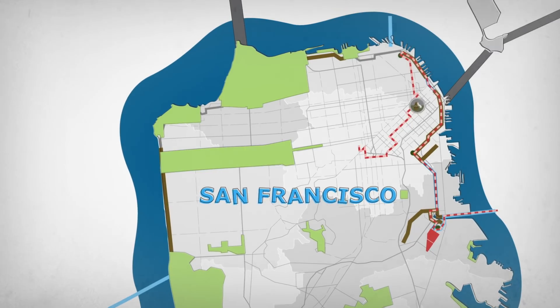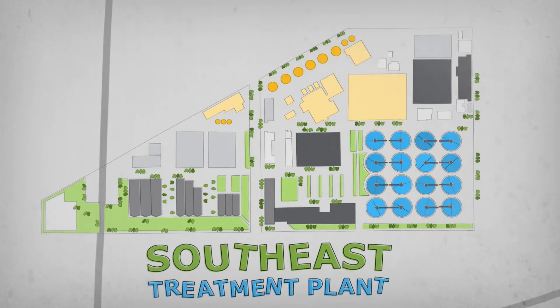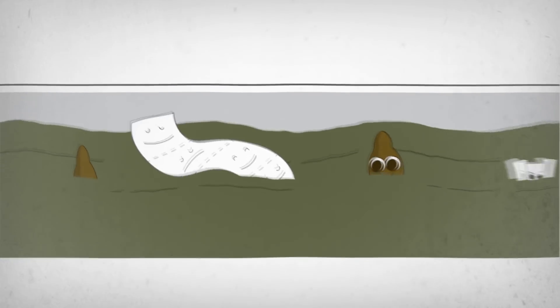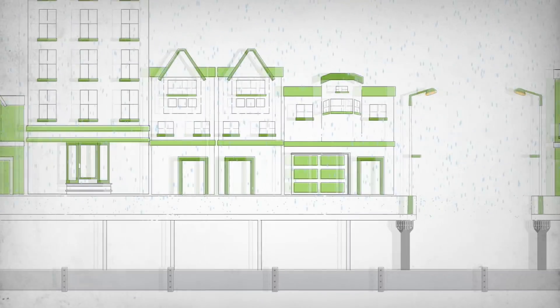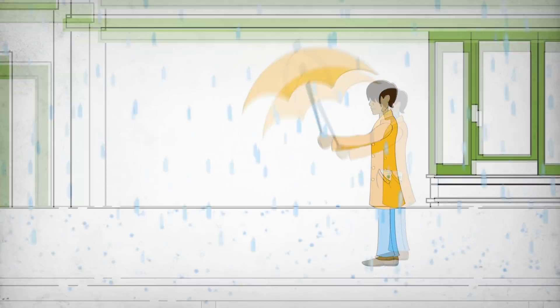San Francisco's sewer system is really special and sometimes really busy. That's because most of the rain that falls on the streets and sidewalks drains into sewers too.